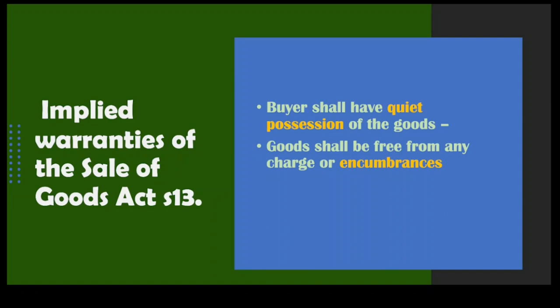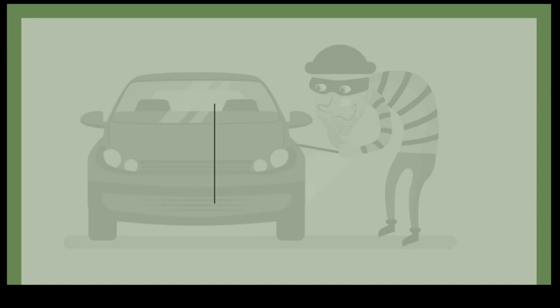There are implied warranties as well. First, the buyer shall have quiet possession of the goods — once the buyer buys the goods, he shall not be disturbed by the seller or anyone else with regard to them. Second, once the buyer pays for the goods, he shall not be required to pay any further payments — the goods shall be free from any charge or encumbrances.